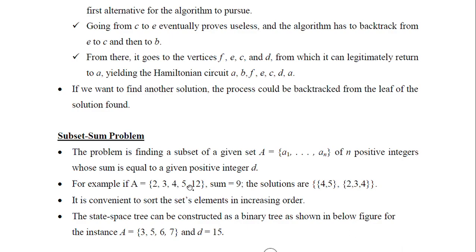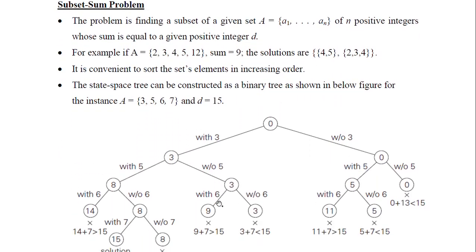The subset sum problem requires finding a subset from a given set of elements such that the sum of the elements in that subset equals a given positive integer n. For example, if set A contains 2, 3, 4, 5, and 12 and the target sum is 9, you must find subsets where the elements add up to 9. For example, 4+5=9, or 2+3+4=9. For convenience, we take the elements in increasing order. Let us see an example state space tree.